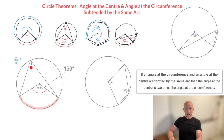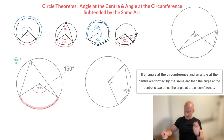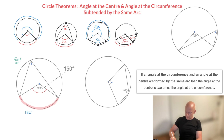The angle A at the circumference and the 150-degree angle at the center are both formed by this same arc. We can therefore state that the angle at the center — 150 degrees — equals two times our angle at the circumference. In other words, 150 degrees is equal to 2 times A.